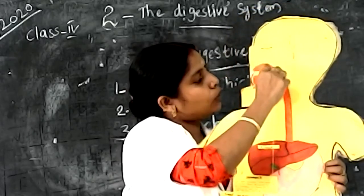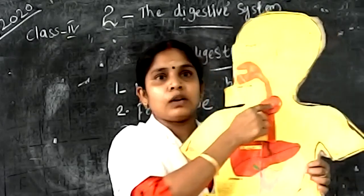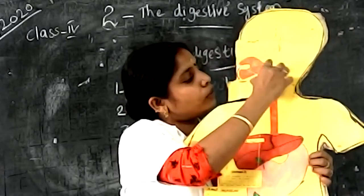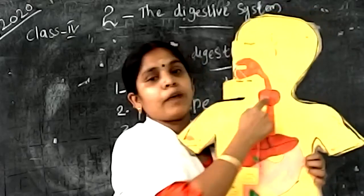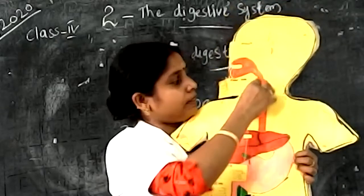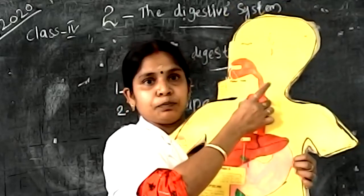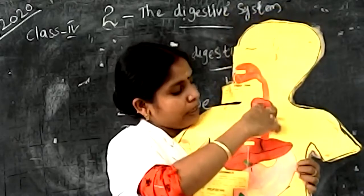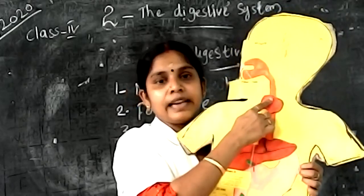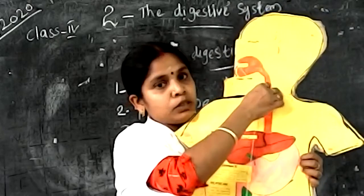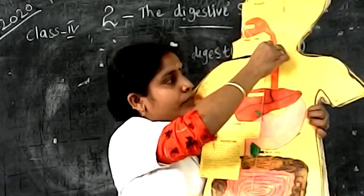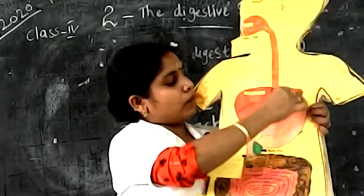When you swallow the food, it enters the food pipe or esophagus. It is a long narrow muscular tube that opens into the stomach. The contraction and relaxation of the wall of the food pipe push the food down into the stomach.